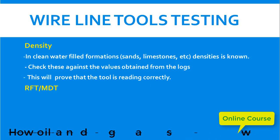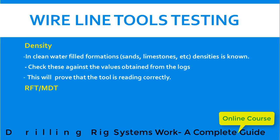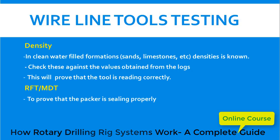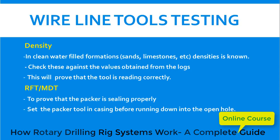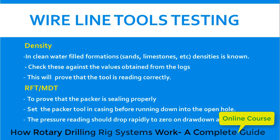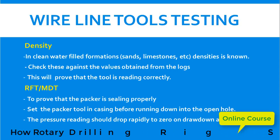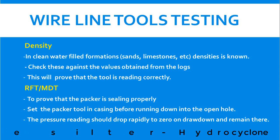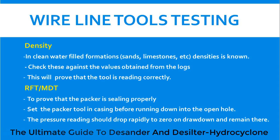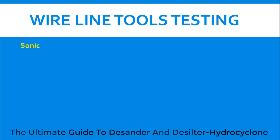For RFT or MDT — RFT stands for Repeat Formation Tester and MDT stands for Modular Dynamic Tester — to prove that the packer is sealing properly, set the packer inside the casing before running down into the open hole. The pressure reading should drop rapidly to zero on drawdown and remain there, because the hydrostatic pressure of the formation column will be isolated by the packer, so the tool will not read hydrostatic pressure anymore.